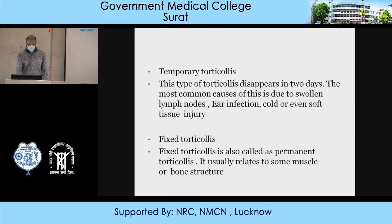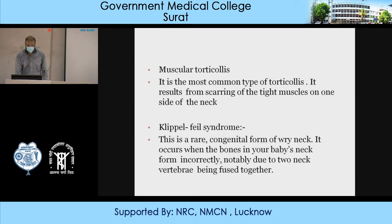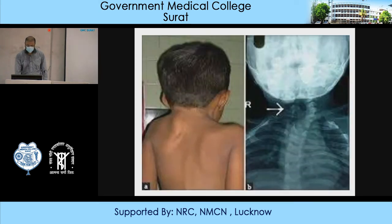Temporary torticollis disappears in two days. The most common causes are swollen lymph nodes, ear infection, cold, or soft tissue injury. Fixed torticollis, also known as permanent torticollis, usually relates to some muscle or bony structure. Muscular torticollis is the most common type, resulting from scarring of tight muscles on one side of the neck. Klippel-Feil syndrome is a rare congenital form of wry neck that occurs when a bone in the baby's neck forms incorrectly, notably due to two neck vertebrae being fused together, as shown on X-ray.